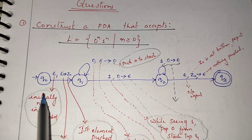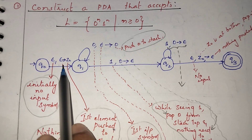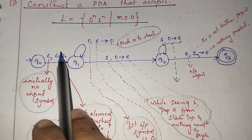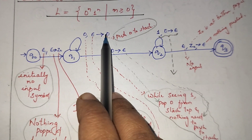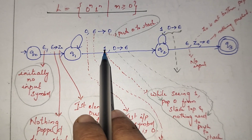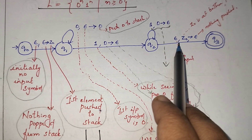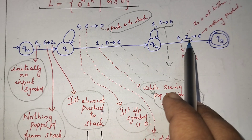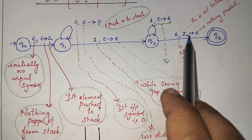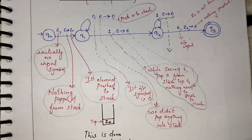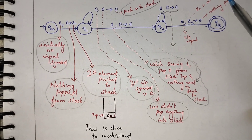So initially, without any input symbol — you can use an arrow mark or a slash — we push Z0 to the stack. Whenever we see a zero we push zero to the stack without popping anything. Whenever we see a one we pop zeros from the stack without pushing anything. Finally, the stack contains only Z0, which we pop out without seeing any input symbol and without pushing anything, thereby reaching the final state where the stack becomes empty. This is the pushdown automata for this problem.